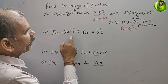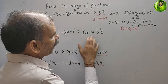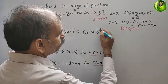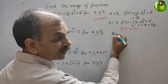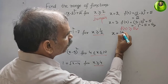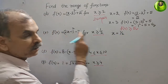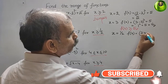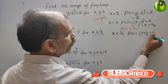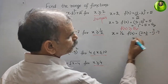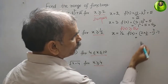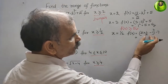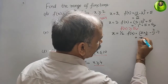Now the second one: f(x) = (2x-1)² - 7, for x ≥ 1/2. First we will take x = 1/2. Substituting: f(1/2) = (2×(1/2) - 1)² - 7. The 2 and 2 cancel, so 1 minus 1 is 0, 0 squared is 0, which gives minus 7.